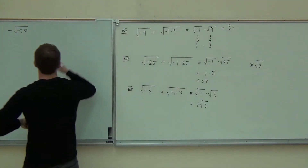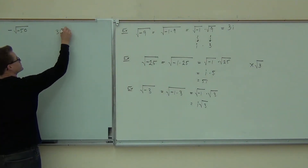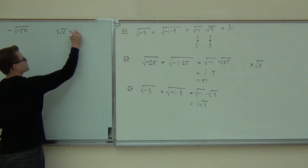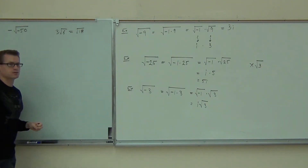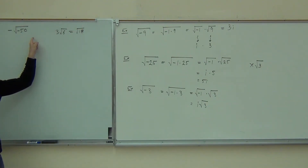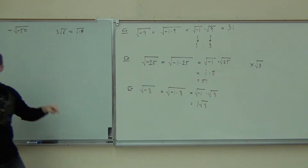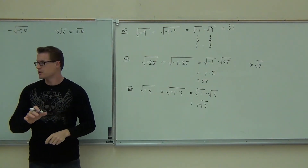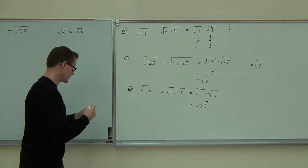That would be like saying 3 root 6 equals root 18. Can you do that? That's what you're doing here if you did that. Because that's negative 1, that's negative 50. That would be like saying that, wouldn't it? You can't do that.